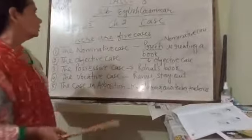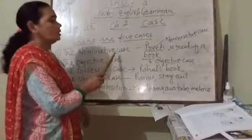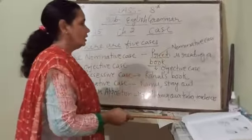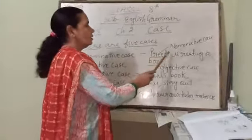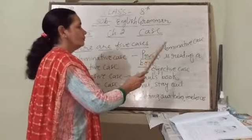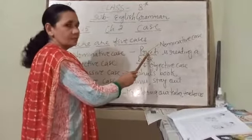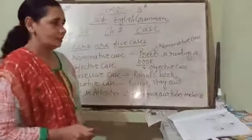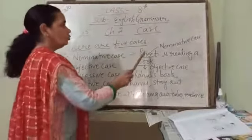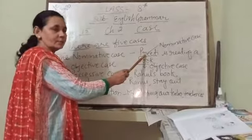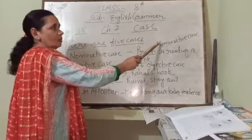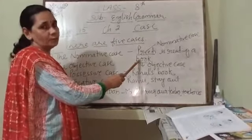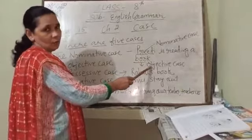First of all, you will know about what is the nominative case. Look at the board and see the example. 'Priti is reading a book.' Here, Priti is a subject and 'a book' is the object. So in a sentence, the noun which plays the role of a subject is the nominative case, and the noun which plays the role of object is the objective case.